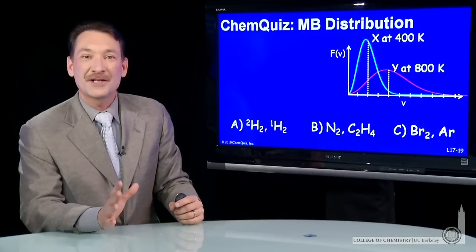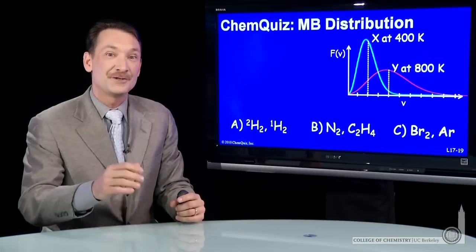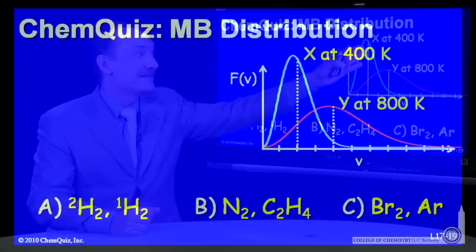We're looking at the Maxwell-Boltzmann distribution plots for two different gases at two different temperatures. So here's gas x at 400 Kelvin, gas y at 800 Kelvin. Now, you'll notice there's a factor of two in the RMS velocities.